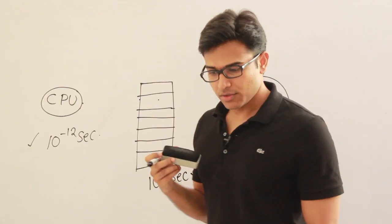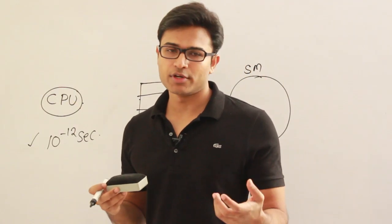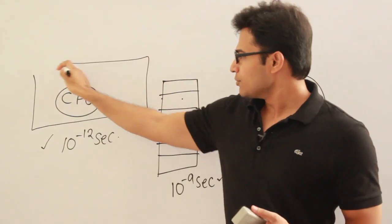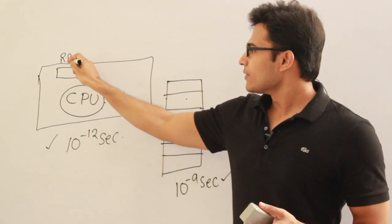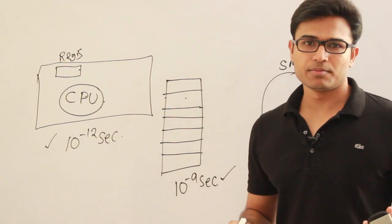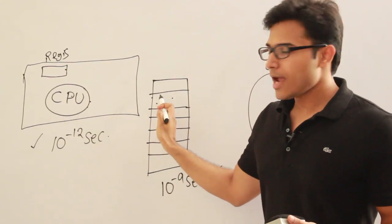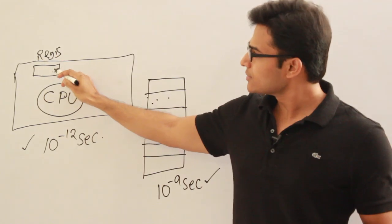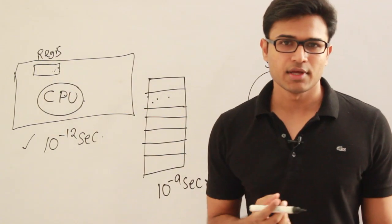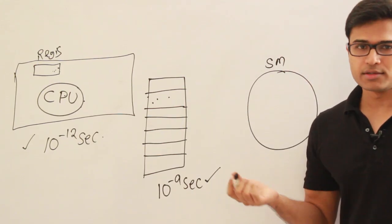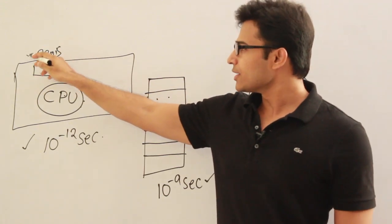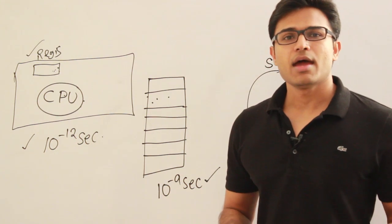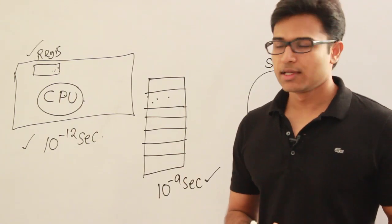What we generally do is use high-speed memory devices or storages. One such storage is registers. On the chip itself — on the chip in which CPU is present — if we have the registers, since they are present along with the CPU on the same chip, they will be very fast compared to the main memory. If the instruction is prefetched — meaning before executing, if the instruction is present in these registers — then CPU can get it fast and execute it faster. The solution works, but the problem is register size is too small. Registers will not be able to hold the entire program; they can hold only a few instructions because they are costly.